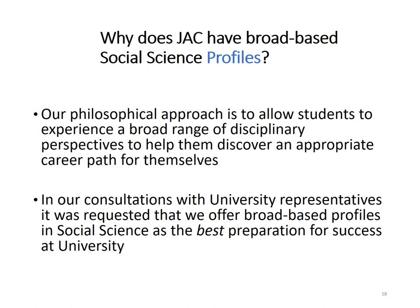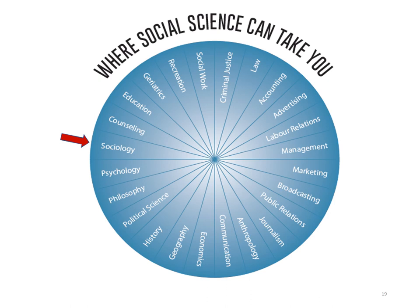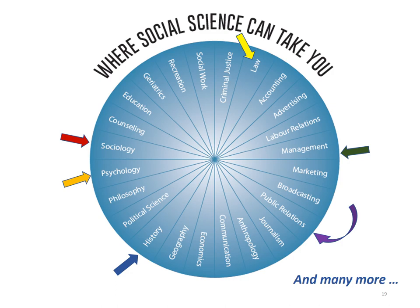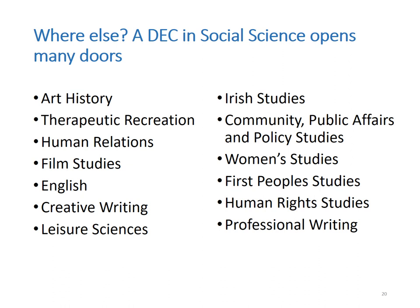John Abbott College's Social Science program is uniquely broad, designed to give students exposure to a wide variety of disciplines so that they may discover where their passion lies and start planning their career path accordingly. No matter which profile you choose, a DEC in Social Science from John Abbott College opens many doors to university studies. Examples of such areas include Art History, Human Relations, Business Administration, Commerce, Computer Science, Film Studies, Leisure Sciences, Community and Public Affairs, Indigenous Studies, Human Rights Studies, and many more.